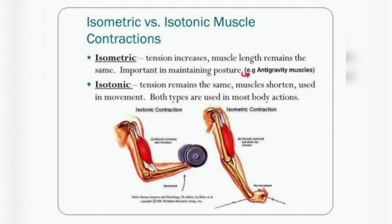Look at the second image — the person is pulling the rope. The person is not lifting or dropping the rope, just pulling it. While pulling the rope, muscle contraction is taking place. The definition of isometric: tension increases but muscle length remains the same — this is a keyword. There is no contraction and no extension; the muscle length remains the same. The best example is pulling the rope.